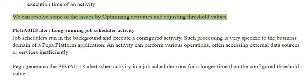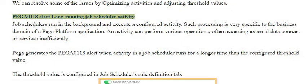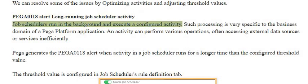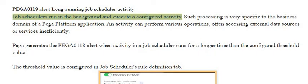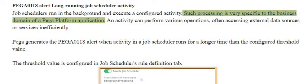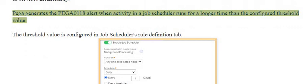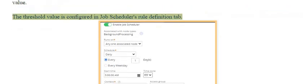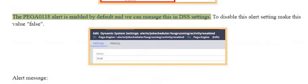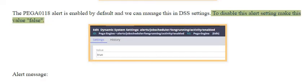PEGA0118 alert: long-running job scheduler activity. Job schedulers run in the background and execute a configured activity. Such processing is very specific to the business domain of a Pega platform application. An activity can perform various operations, often accessing external data sources or services inefficiently. Pega generates the PEGA0118 alert when an activity in a job scheduler runs for a longer time than the configured threshold value. The threshold value is configured in the job scheduler's rule definition tab. The PEGA0118 alert is enabled by default and we can manage this in DSS settings. To disable this alert, set the value to false.